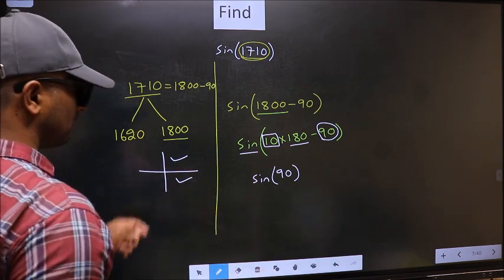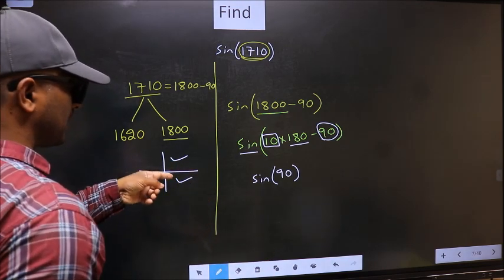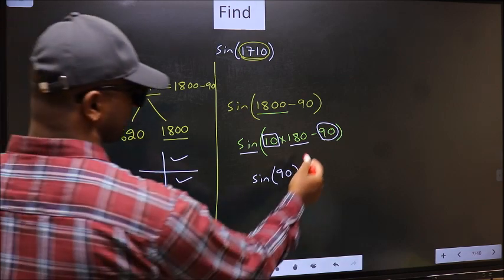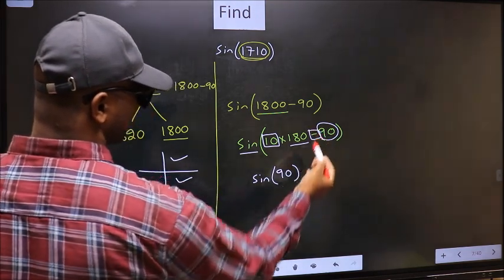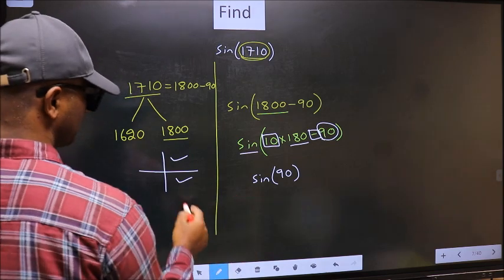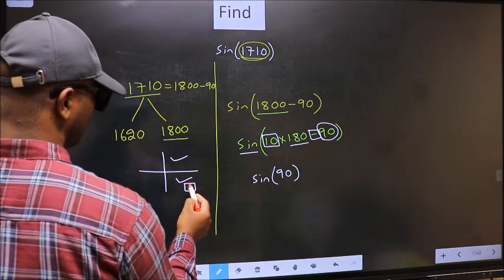So now to select the quadrant, we should look at this symbol. Here we have negative. That means angle lies in the fourth quadrant.